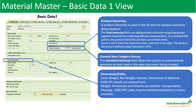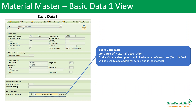Next, we have dimensions and EAN details. Here, the gross weight, net weight, volume, dimensions of the material, EAN, and UPC details are entered. The weight, dimensions, and volume are used for transportation planning. EAN and UPC codes may be mandatory or statutory in some countries. And then we have the basic data text. When you click and go into this, you can describe a long text of material description. Because the material description at the beginning is restricted to 40 characters, here you can give a detailed description about the material, and also mention the language you are using.